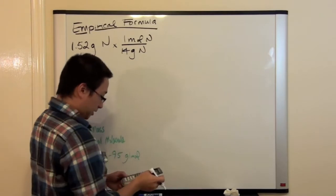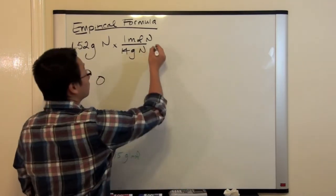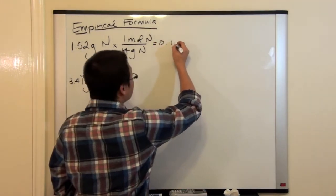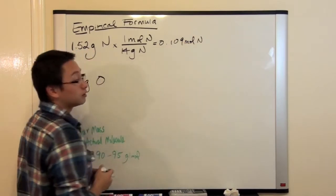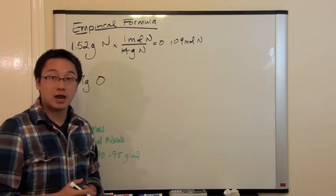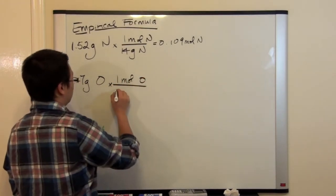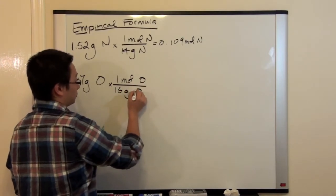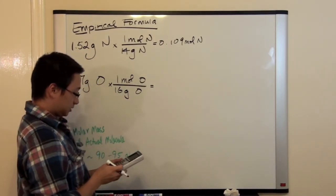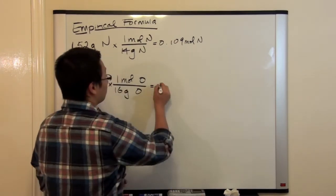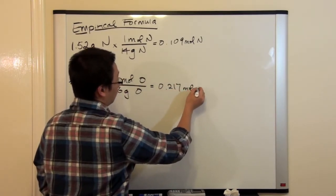Using a calculator: 1.52 divided by 14 gives us 0.109 moles of nitrogen. Then we do the same for oxygen: 1 mole of oxygen is 16 grams per mole. So 3.47 divided by 16 gives us 0.217 moles of oxygen.